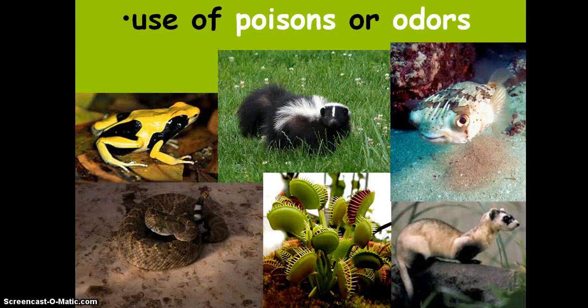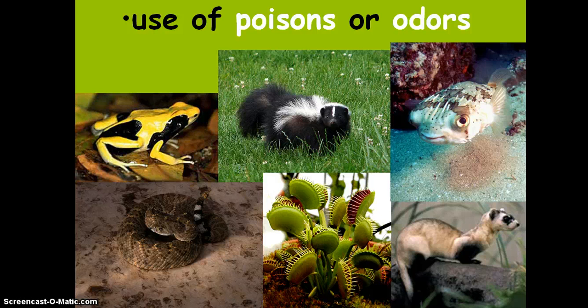Use of poisons or odors: poisons help an organism avoid being eaten, and bright warning coloration warns other animals to stay away because of toxins in their skin. Other animals use odors — you see the skunk in the middle. The rattlesnake uses sound to deter threats and then has venom with poison if it needs to strike.